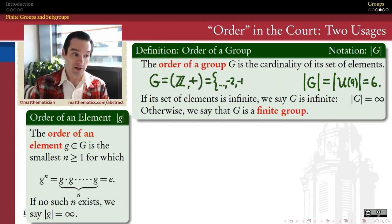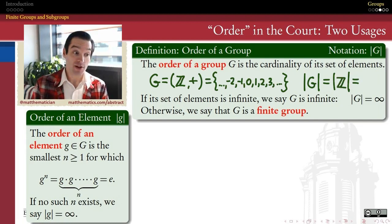On the other hand, if I'm looking at a different group, like maybe the group of integers under addition, the group of all integers under addition of integers, that is a group that satisfies associativity, closure, identity, inverse property. But it's got infinitely many elements in its set of elements, and so we would say that the order of that group is infinity, and we'll call it an infinite group. So that's one notion of order.